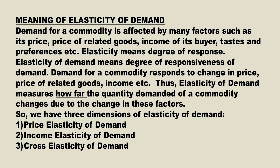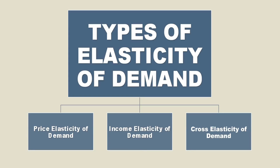By the definition itself, we can find out the three dimensions of elasticity of demand. According to the factors affecting the demand for a commodity, we have three types of elasticity of demand: price elasticity of demand, income elasticity of demand, and cross elasticity of demand.